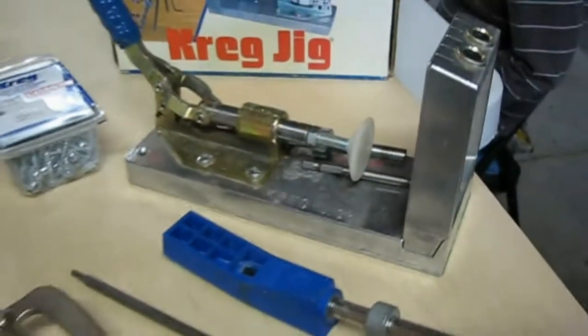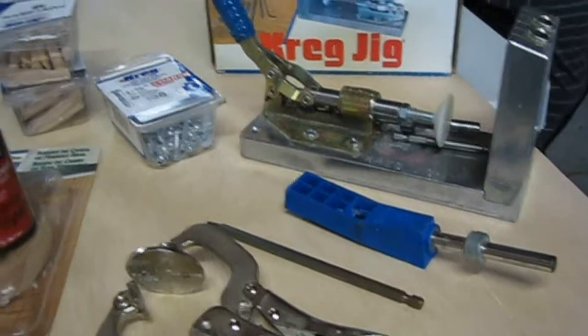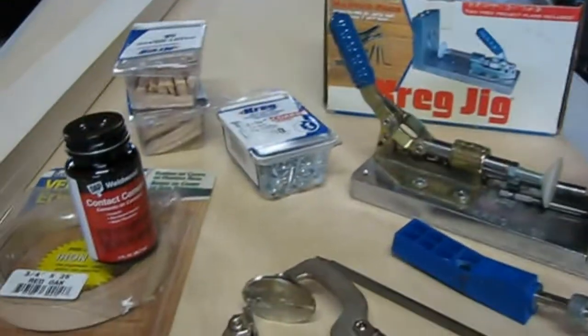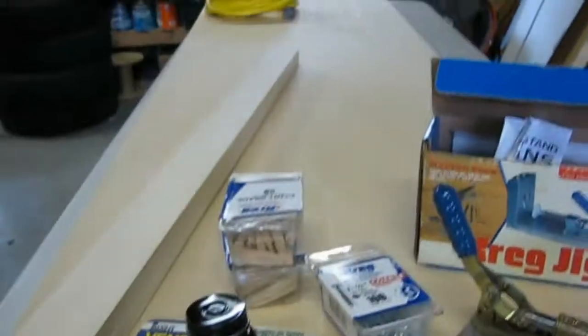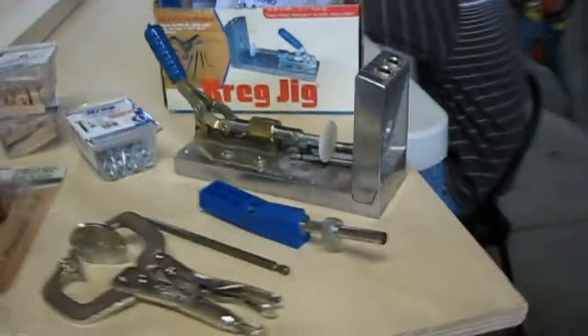There's a Kreg pocket tool jig, and this allows you to make really quick, easy cabinet-type boxes and frames without the need for fancy dovetailing and all that. Sometimes you just want a simple project.